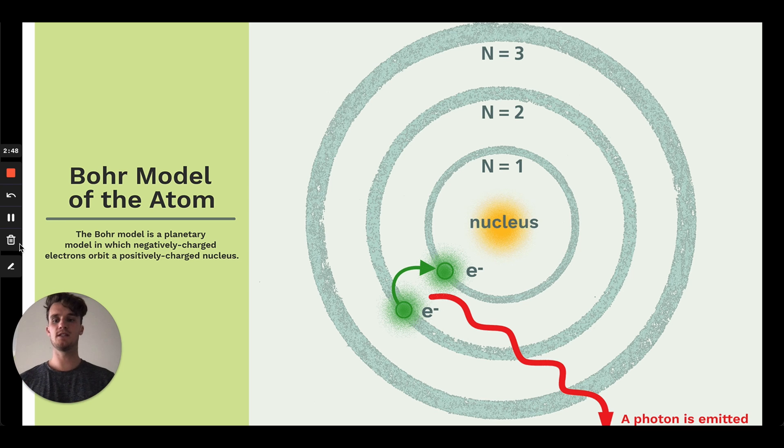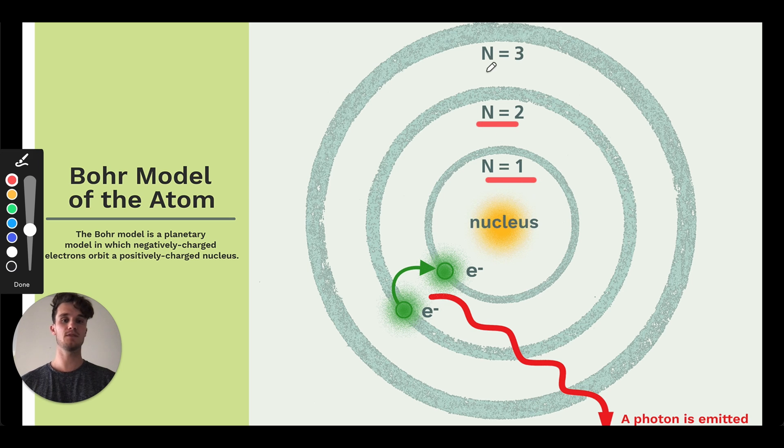What this is representing is there are these discrete levels of energy that electrons can inhabit. And we name them, or rather we number them: n equals one, n equals two, n equals three. They represent the different energy states that electrons can be in. But we can see that due to math, essentially, they can only exist in these different steps. An electron couldn't exist in this in-between state, it would either have to stay at n equals one or go up to n equals two.